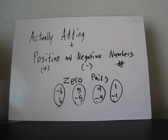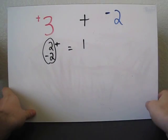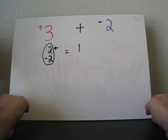All right, so we're going to be adding positive and negative numbers, and we're going to use zero pairs to show our work. So we're going to go back to adding 3 plus negative 2.